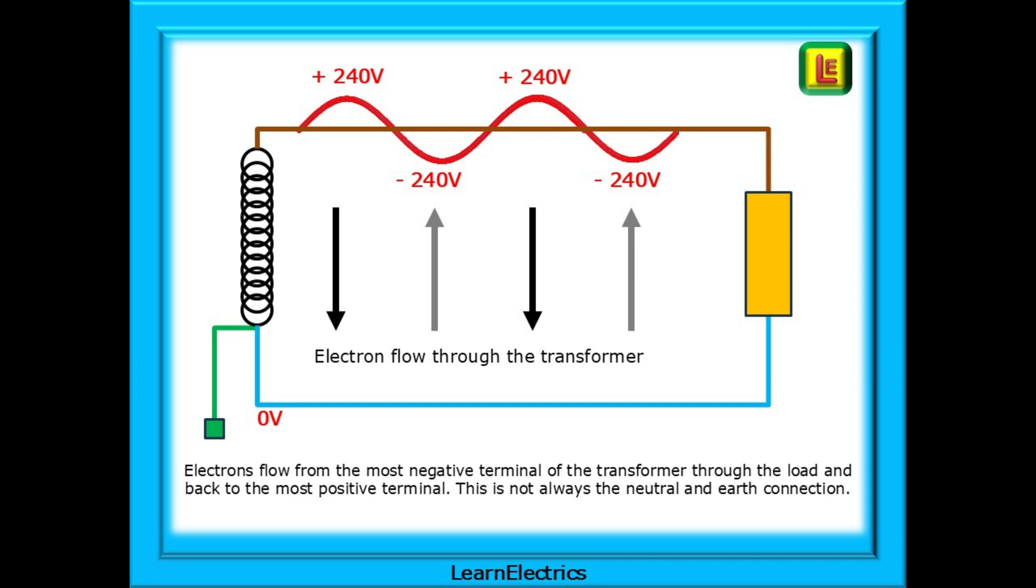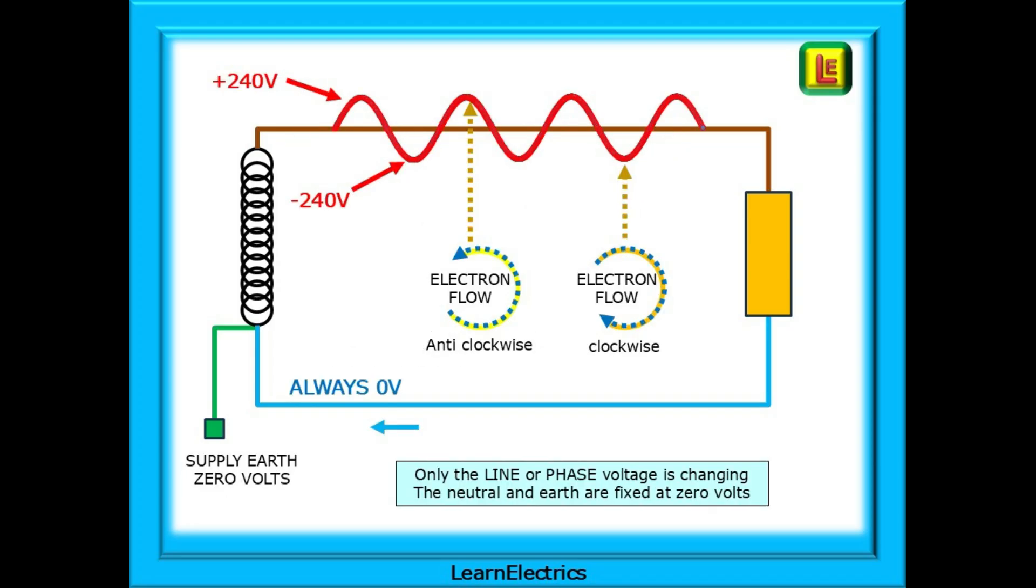When the line voltage is in a negative half cycle, line is more negative than the neutral. So the electrons flow from the top of the transformer along the line through the load and re-enter the bottom of the transformer along the neutral conductor. So electron flow around the circuit will look like this. In our example here, when the line is in a positive half cycle reaching plus 240 volts RMS, the electrons flow anticlockwise around this circuit. In a negative half cycle, the line reaches minus 240 volts RMS and the electrons flow clockwise. Pause the video and take a moment to understand this. It's so very important when analyzing electronic circuits.